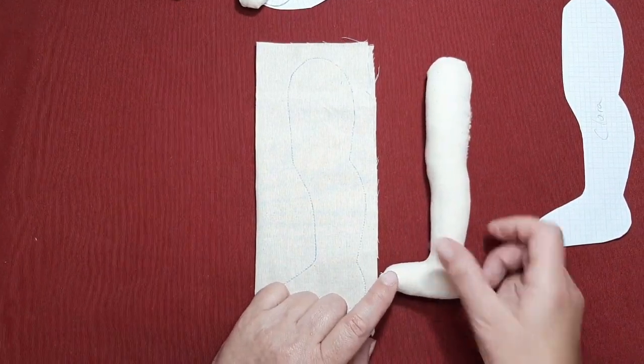Son unas botitas que compré en AliExpress, pero tienen un tamaño distinto a los zapatitos que suelo usar normalmente. Mirad, este es un zapatito de los que yo llamo de 18 pulgadas y esta es la botita. ¿Veis? Es más pequeña y más estrecha. Con lo cual, las piernecillas que hemos usado para hacer este tipo de zapatos, para esta no me servía.